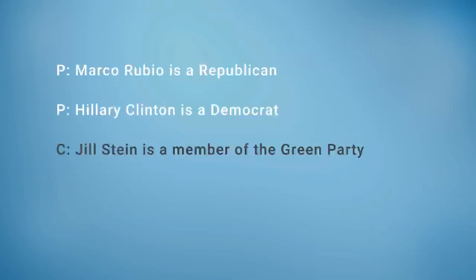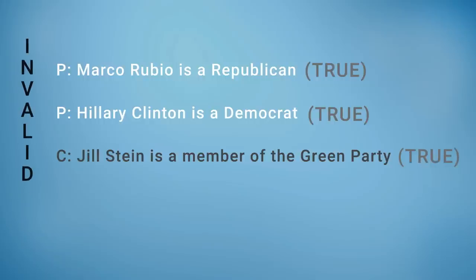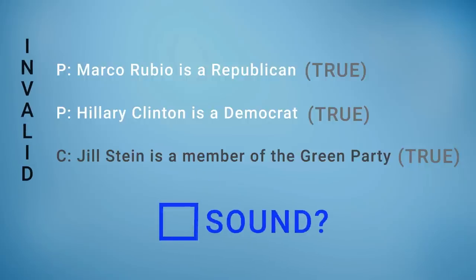But what about this one? Marco Rubio is a Republican, which is true. Hillary Clinton is a Democrat, which is true. And the conclusion is that Jill Stein is a member of the Green Party. In this particular case, both of the premises are true and the conclusion happens to be true. But the two premises don't logically guarantee that conclusion, so the argument is invalid and therefore it is not sound.